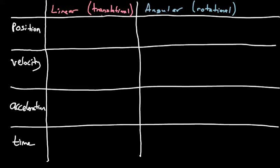First let's address the terminology and variables we're going to use. We'll start with a review of linear motion, sometimes called translational motion, where something is moving from place to place. For position we used x or y — breaking that up into horizontal and vertical motion — and we measured that in meters. With position we could have a starting position and an ending position, so we might have had a subscript to denote when we were looking at it, whether it's x or x-naught, or y or y-naught.